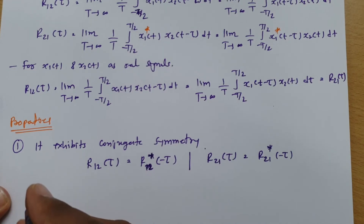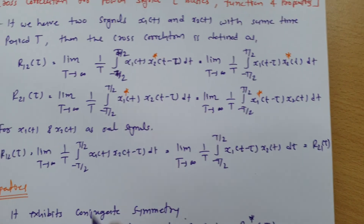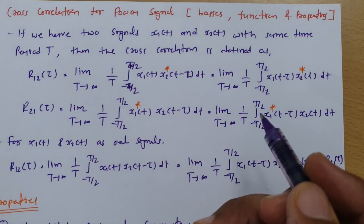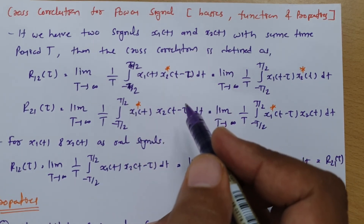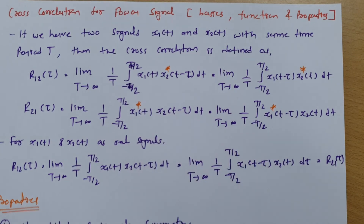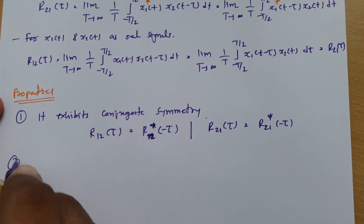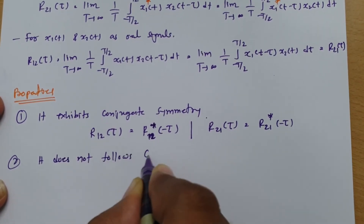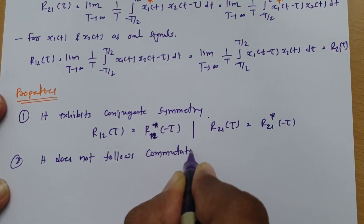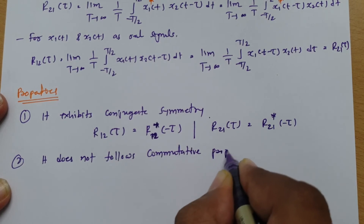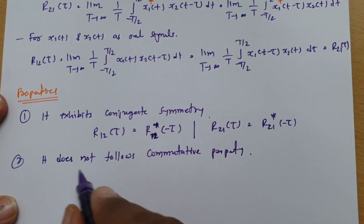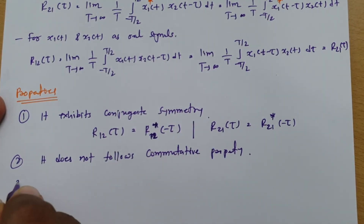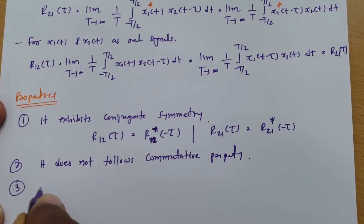The second property is that cross correlation does not follow the commutative property for complex signals. Unlike convolution, which follows the commutative property, cross correlation does not follow commutative property.